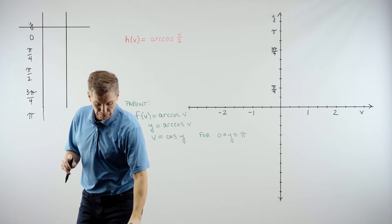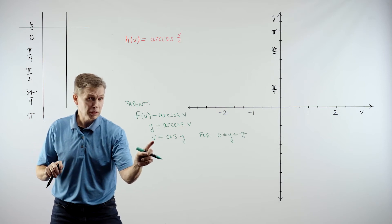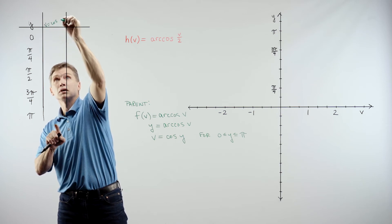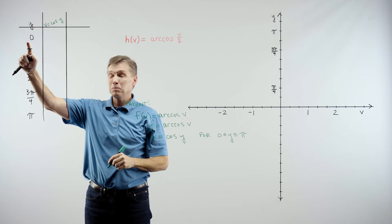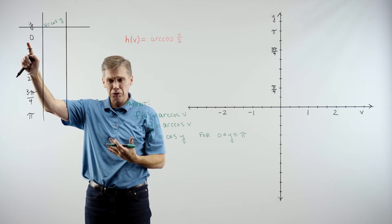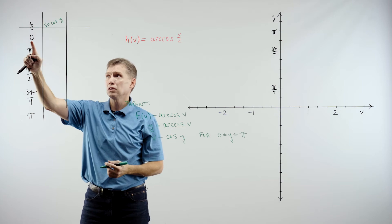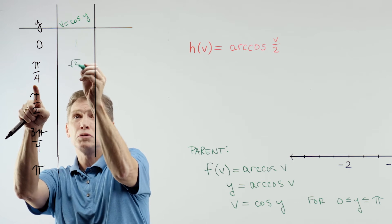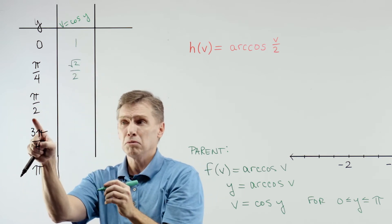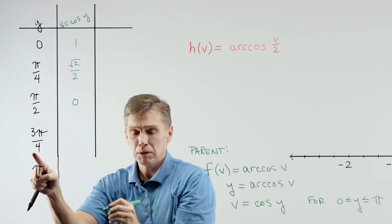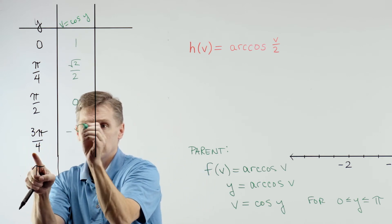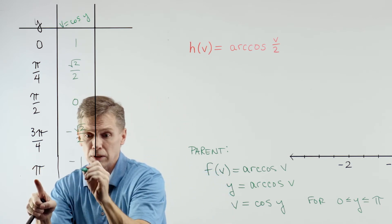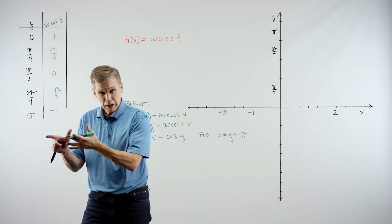And then next, we can use this v equals cosine of y to fill in this column where v will just equal cosine of y. And this is what I meant by I can find cosine of different angles. I'm pretty familiar with that, so cosine of 0 is 1. Cosine of pi over 4 is the square root of 2 over 2. Cosine of pi over 2 is 0. 3 pi over 4, cosine of that negative square root of 2 over 2. And cosine of pi, negative 1. All right, so let's take this information and try to graph it.